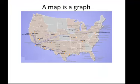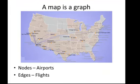A map can be an example of a graph. Actually, lots of things can be examples of graphs. But in the map example, we can think of nodes as airports. Here's the map of where Southwest flies to from San Diego, and the edges are flights.